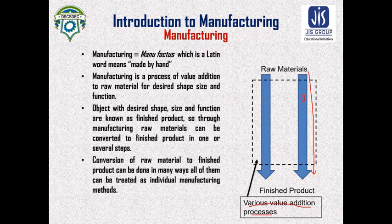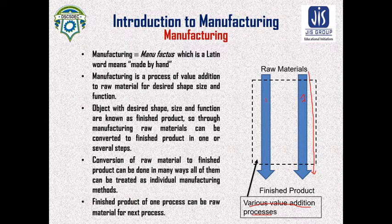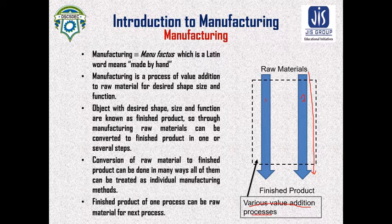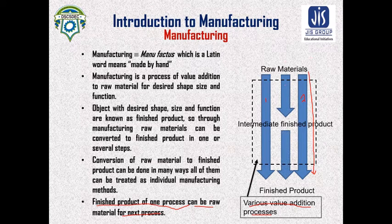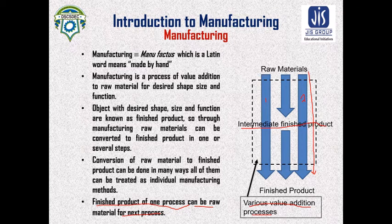Manufacturing can be done in one step or in more than one step. In the case of more than one step, the finished product of one process can be the raw material for the next process. So from raw material, an intermediate finished product is formed, and after that we get the finished product.